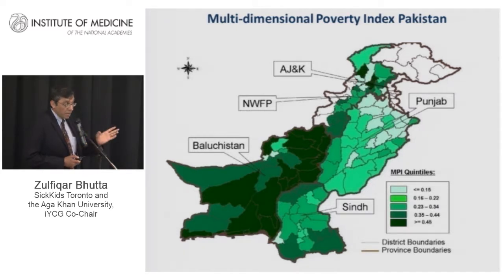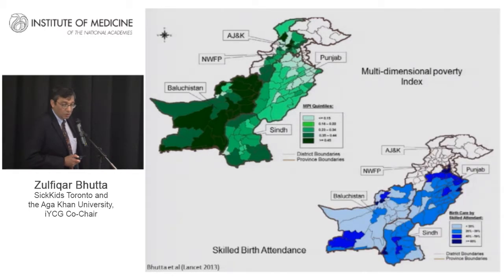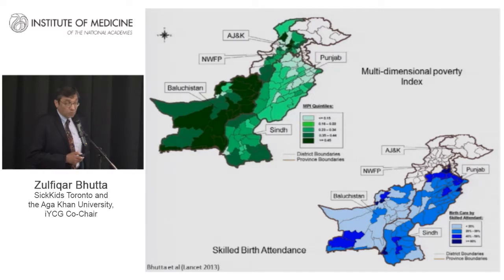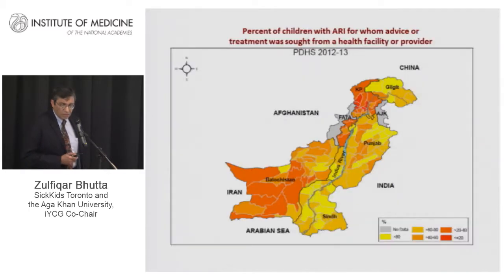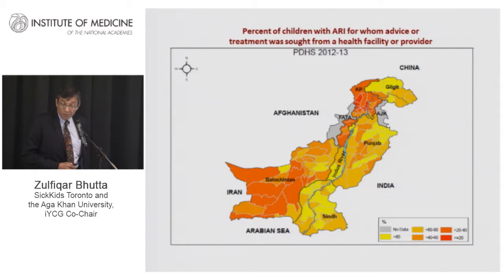There are parts of the country where living standards may be comparable to what you have in the West, and others where conditions are comparable to sub-Saharan Africa. There is a fairly close relationship between this distribution pattern, health services availability, and access. In many parts of the country, skilled birth attendants reach only about 10 to 20% of the population, and clustering of children with appropriate access to care is largely around areas with higher human development indices.